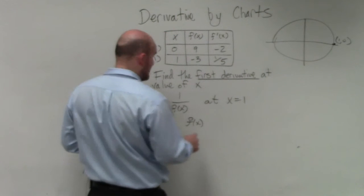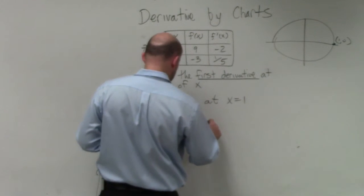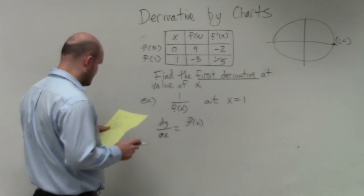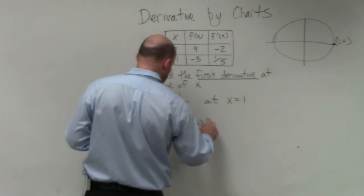But by using the quotient rule, we have f of x at x equals 1. The derivative of my numerator, which is going to be 0,